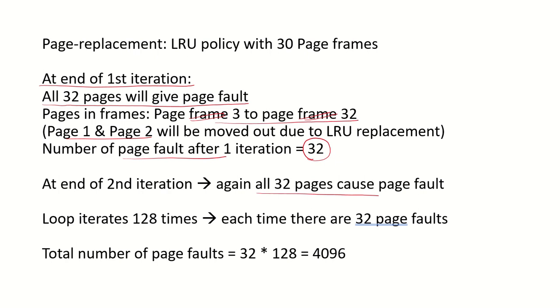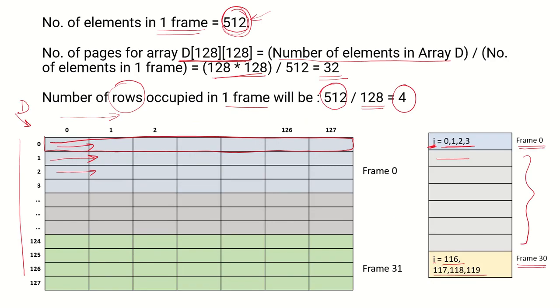So in each iteration we are seeing that there are going to be 32 page faults.